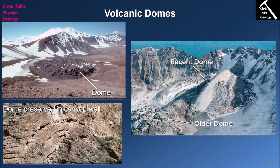Volcanic domes are associated with felsic lavas, and these felsic lavas are very very sticky — they have a very high viscosity and they are absolutely stuffed with volatiles, so there's lots of dissolved gas in the lava as well. Because the lava is so viscous, it will not be able to flow a great distance from the vent, so volcanic domes are often quite small — typically only a few hundred meters across and a few hundred meters high.